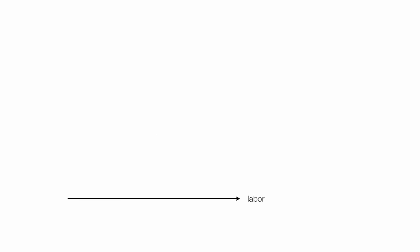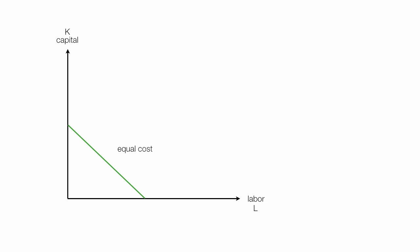I put labor on the x-axis and capital on the y-axis, and I use K for capital and L for labor. The green line is called an ISO cost line, which means equal. So the green line is equal cost — everywhere along this line the producer has an equal cost with a mix of capital and labor.